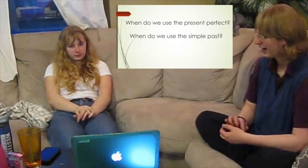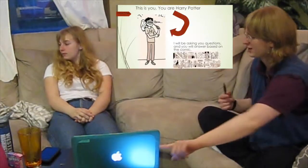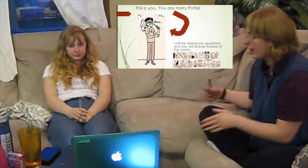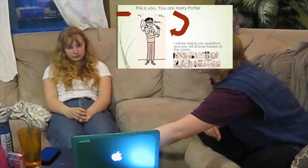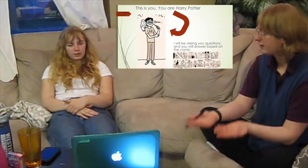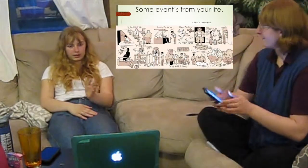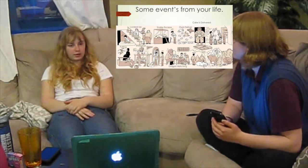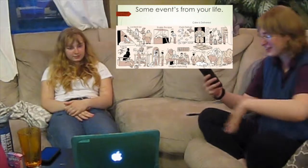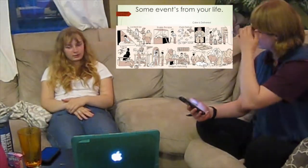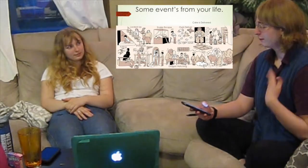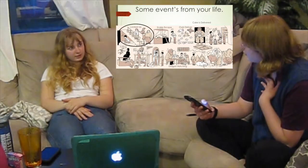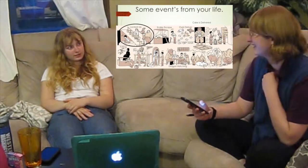Now we're going to do a controlled practice. You are all Harry Potter — this is a picture of you. I will be asking you questions about your life as Harry Potter, and you will answer based off the comic. These are the events of your life. You are old, strong Harry — you're married to Ginny, and these have already happened. Have you ever been locked up under the stairs? I have been locked up under the stairs. How did that make you feel? I felt sad and lonely.